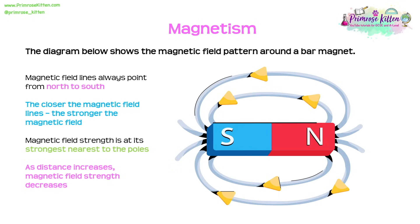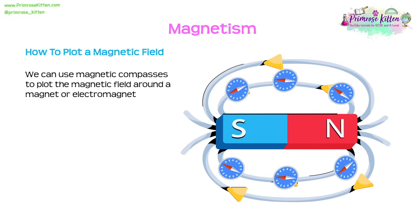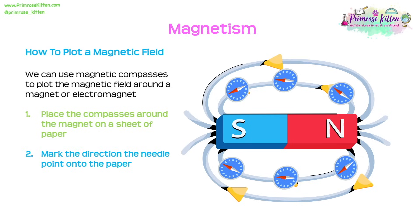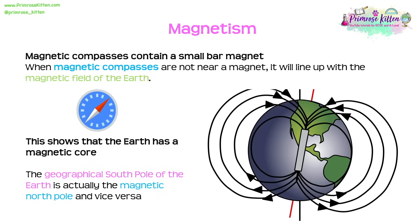As we move away from the magnet, the magnetic field strength decreases. To plot a magnetic field, place compasses around the magnet on paper, mark the direction the needle points, then join the points to show field lines. Magnetic compasses contain a small bar magnet. When not near another magnet, they align with the Earth's magnetic field — telling us the Earth has a magnetic core. The geographical south pole of the Earth is actually the magnetic north pole, and vice versa.